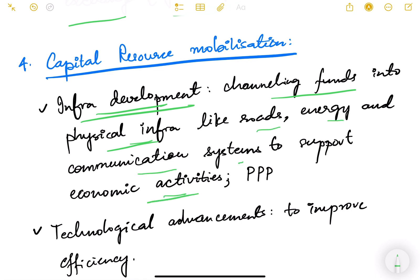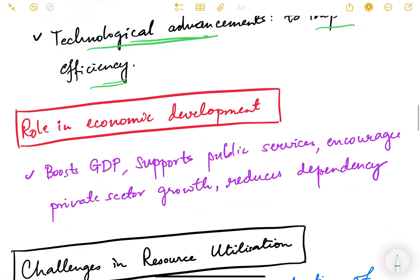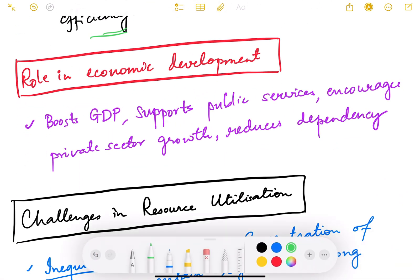Capital resource mobilization involves infrastructure development — channeling funds into physical infrastructure like roads, energy, and communication systems to support economic activities — as well as public-private partnerships. Technological advancement also falls here, as a more technologically advanced country has more efficient capital, improving overall capital efficiency.